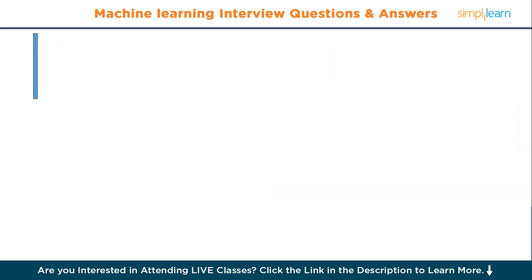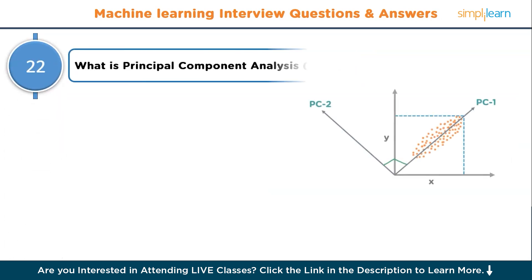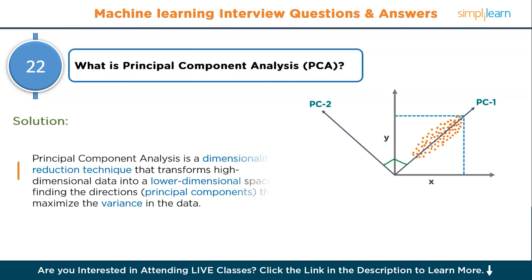Question number twenty-two: what is principal component analysis? Principal component analysis is a dimensionality reduction technique that transforms high-dimensional data into a lower-dimensional space by finding the directions — that is, principal components — that maximize the variance in the data.